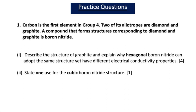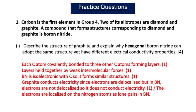Now let's test your knowledge with some practice questions. Question one states: carbon is the first element in Group 4. Two of its allotropes are diamond and graphite. A compound that forms structures corresponding to diamond and graphite is boron nitride. Part one says: describe the structure of graphite and explain why hexagonal boron nitride can adopt the same structure, yet have different electrical conductivity properties. This is a four mark question.